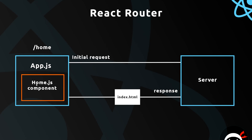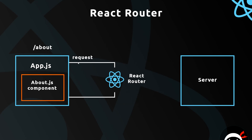Any subsequent requests we make inside this component — say we have a navbar and click a link to go to an about page — we make that request but it doesn't go all the way to the server. Instead, the React Router intercepts it and says, no, you don't need to go to the server. All it does is serve up the about component and inject that into App.js instead.